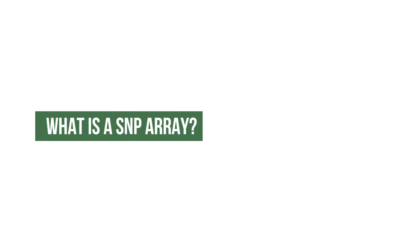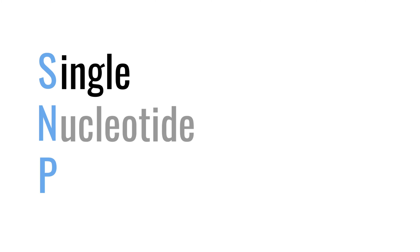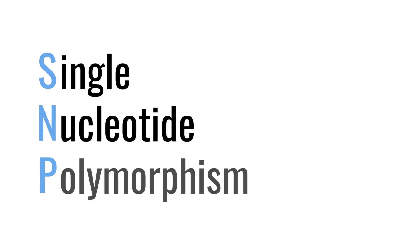What is a SNP array? A SNP array — SNP stands for single nucleotide polymorphism — and it's a microarray-based technology that allows you to look for differences in copy number primarily between different cells.